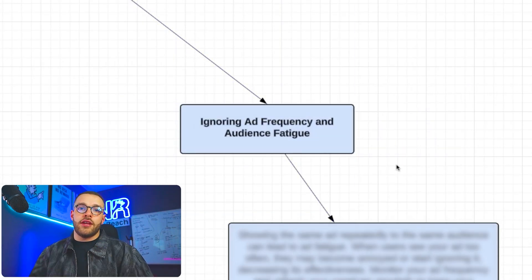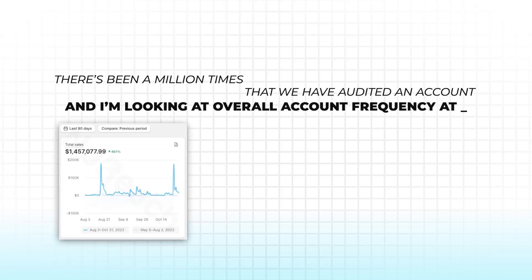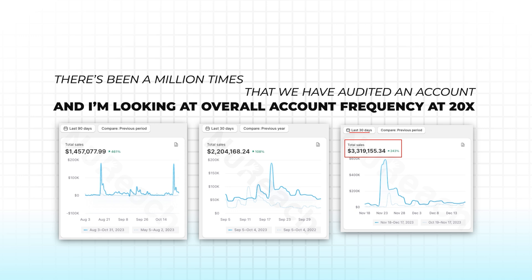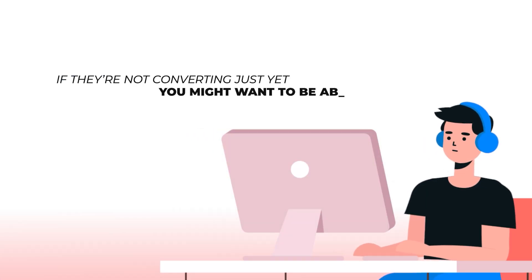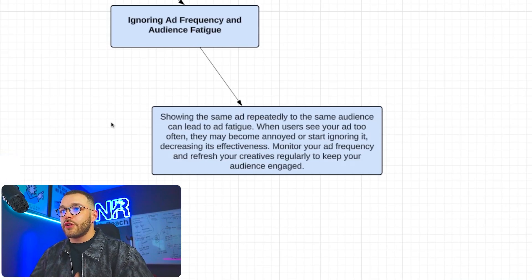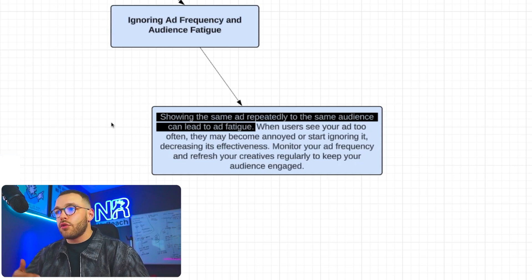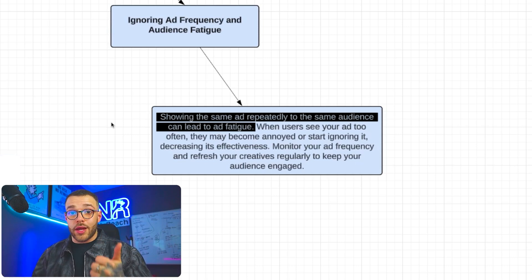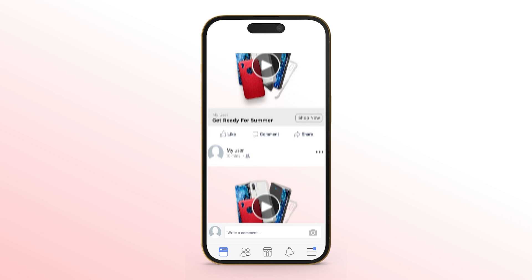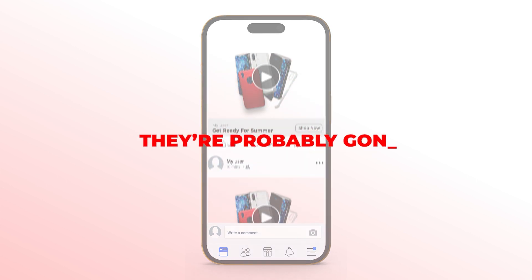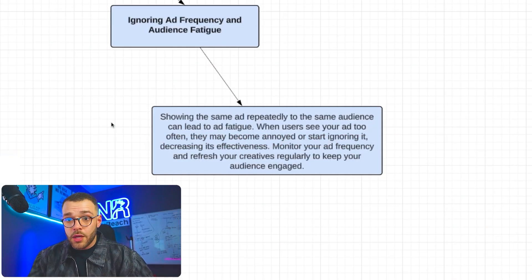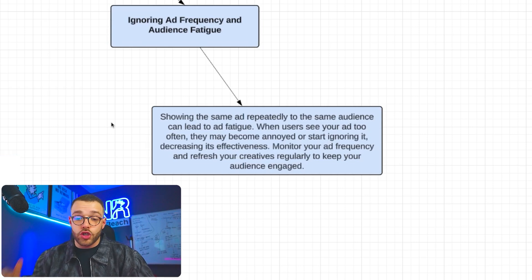The fourth mistake we see consistently is ignoring ad frequency and overall audience fatigue. There have been many times we've audited an account and I'm looking at an overall account frequency of 20x — meaning each individual person is seeing those ads 20 times. Those audiences are becoming fatigued. If they're not converting, you might want to expand your audiences. Showing the same ad repeatedly to the same audience leads to not only creative fatigue but audience fatigue.